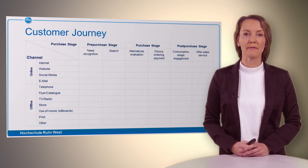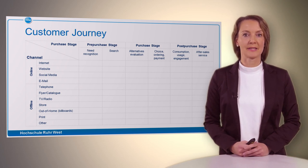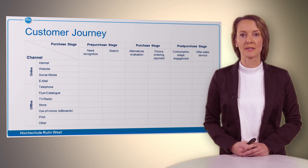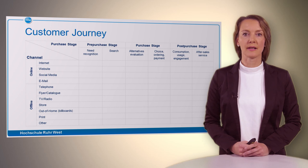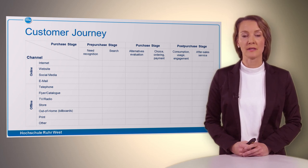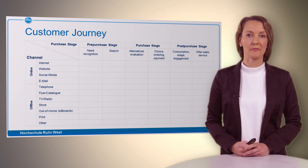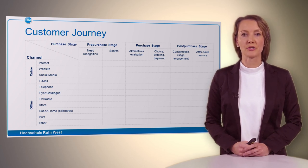Here's the model. On the left-hand side you can see all the different channels — some online and some offline. Channels include sales channels and media channels: for example, the internet such as search engines, websites, social media, or email. We also have offline channels like telephone, flyers, catalogs, TV and radio, stores, out-of-home advertising like billboards, print, and communication with other people such as friends. On the top you can see the different phases — pre-purchase stages, purchase stages, and post-purchase stages.